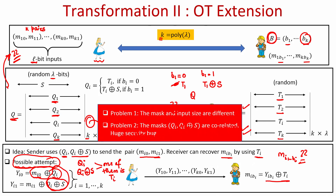If S would have been independent for each pair, there would be no problem. But the same S is used across all k pairs. A simple attack Bob can launch: if he XORs the encryptions of all the messages he is receiving, the effect of S cancels out, and Bob might end up learning the XOR of all of Alice's messages apart from the ones he is already interested in — and that is a security breach.